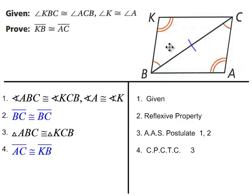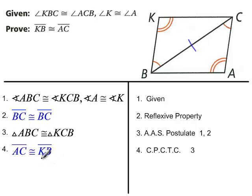Once you've established that this triangle is congruent to that triangle, then you can say the corresponding parts are congruent. For example, CA is congruent to BK — the order of the letters can be reversed, so AC congruent to KB is also appropriate.